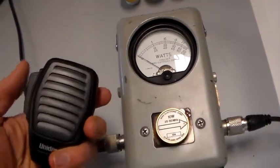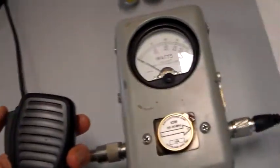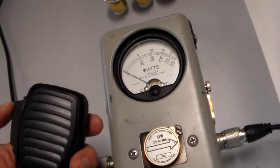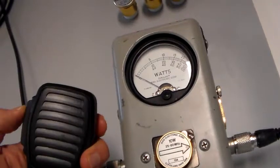So briefly illustrating, every time I key the microphone here, that's going to put the transceiver into transmit mode, and then we should see the power registered on the wattmeter. And sure enough, I see power there.